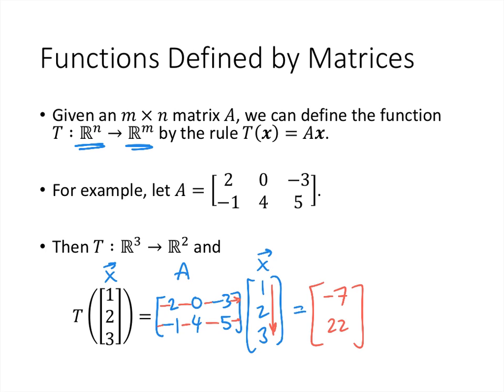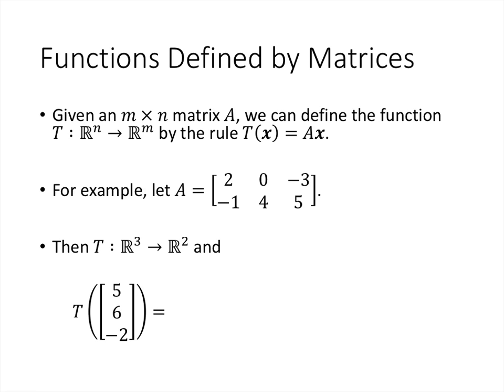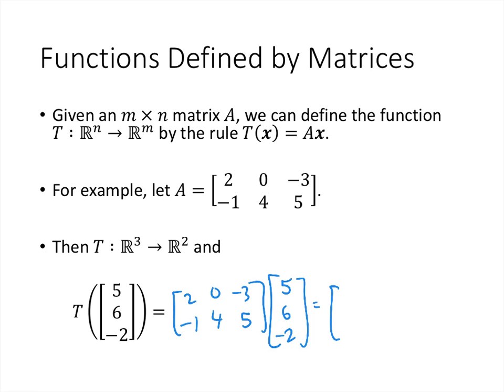As another example, we can plug in the vector [5, 6, negative 2]. Again, we multiply it by the same matrix. Going across the first row: 2 times 5 is 10, 0 times 6 is 0, and negative 3 times negative 2 is 6, giving 10 plus 0 plus 6 equals 16. Then going across the second row: negative 1 times 5, plus 4 times 6, plus 5 times negative 2, that's negative 5 plus 24 plus negative 10, which is 9. So the result of plugging in this vector is [16, 9].